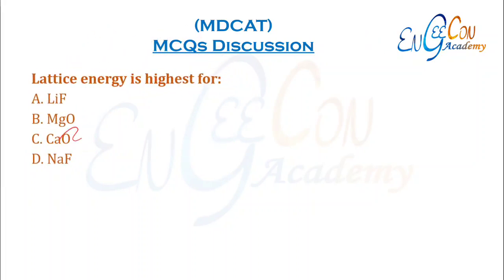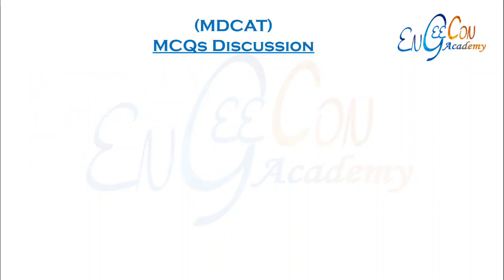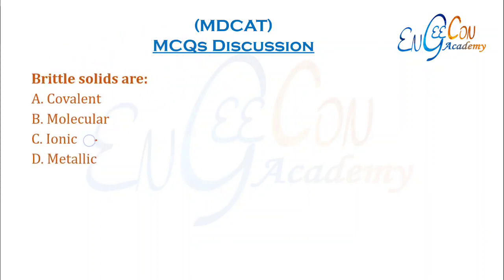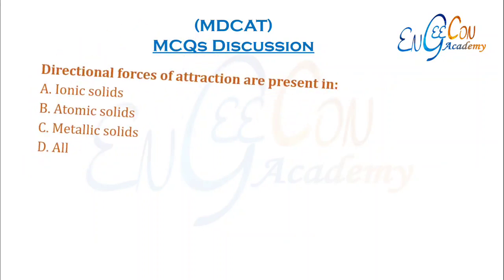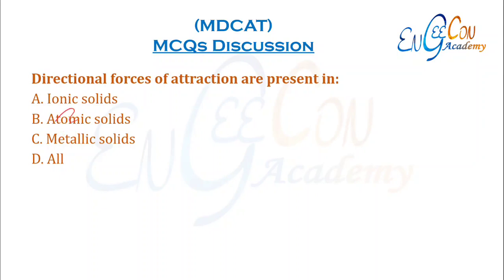Lattice energy is greatest for: when comparing group 2 and group 1 elements, magnesium has a small size and the same charge, leading to greater lattice energy. So B is the correct option. Brittle solids are ionic solids — when a small force is applied, like charges come opposite to each other and the crystals break. Graphite is a non-metallic solid that is a very good electrical conductor. Directional forces are present in atomic or covalent solids because they are joined by covalent bonds, which have a proper direction due to orbital overlap.